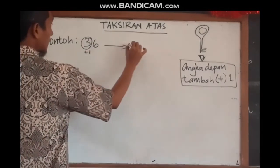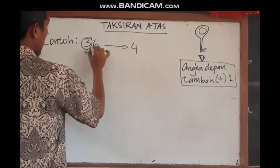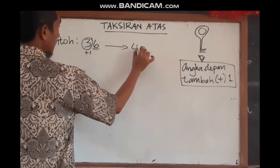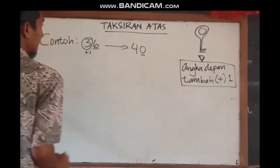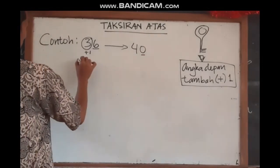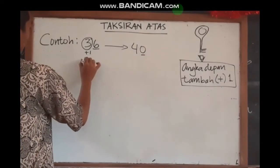Contoh: 36 — angka 3-nya kita ambil, tambahkan 1 menjadi 4, dan angka 6-nya kita ganti jadi 0. Jadi angka yang di belakang itu selalu kita ubah menjadi 0.